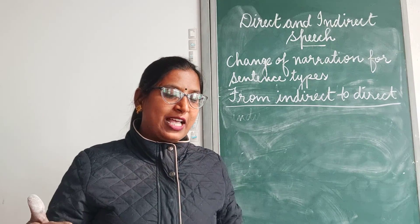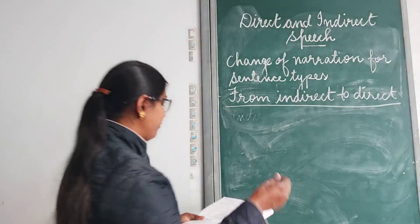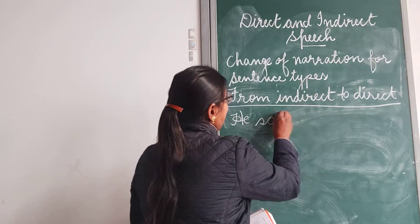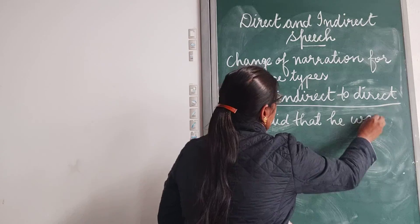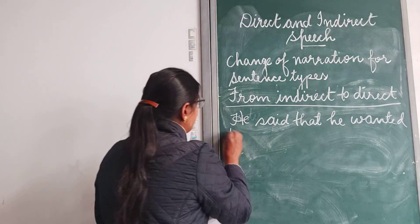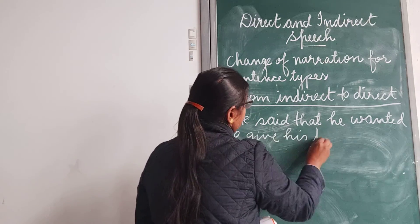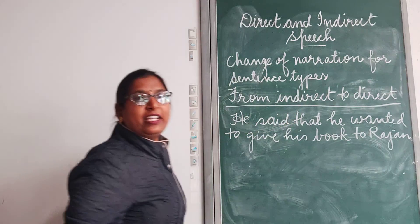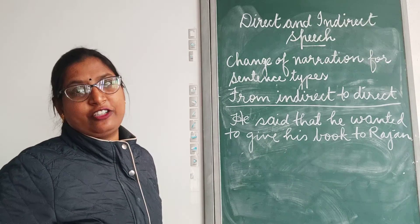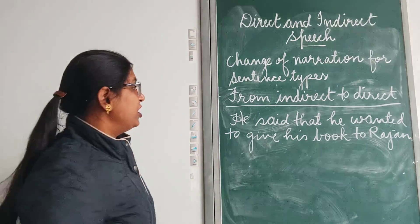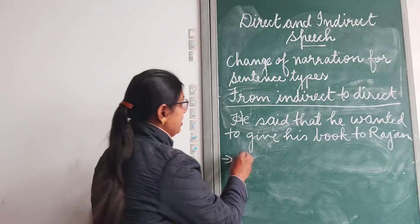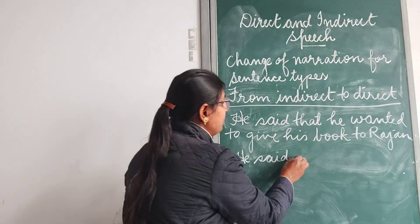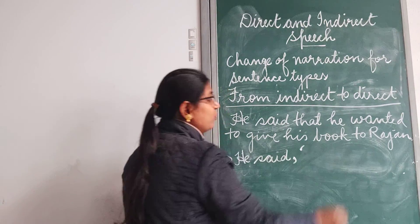Now let me write an example to help you understand better. 'He said that he wanted to give his book to Rajan.' We know that this sentence is given in indirect speech. We have to change this into direct speech. The conjunction 'that' will be removed, and instead a comma will be placed followed by inverted commas.